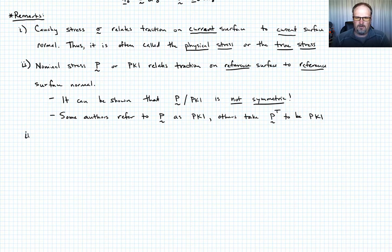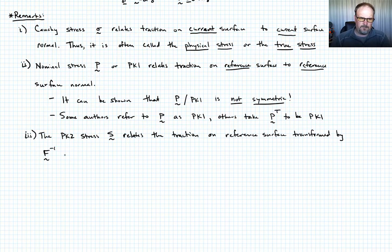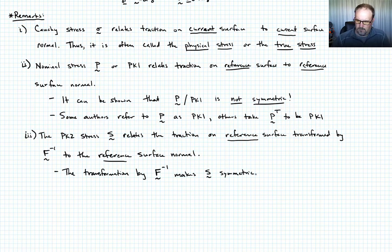Third comment I want to make. So the pK2 stress, S, relates the traction on a reference surface transformed by the inverse of the deformation gradient to the reference surface normal. The operative here is that we're still working in the reference state. You're probably thinking, why on earth do we do that? This transformation by F inverse makes S symmetric. So whereas pK1 is not symmetric, pK2 is.